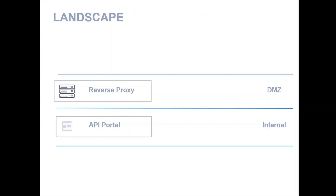The API Portal comes in the internal zone and it is usually paired with a reverse proxy. Reverse proxies can be either an Nginx server or an Apache HTTP server — any of them is possible. However, the API Portal doesn't give a direct capability to split it into two zones, and hence you may have to place a reverse proxy in the DMZ.